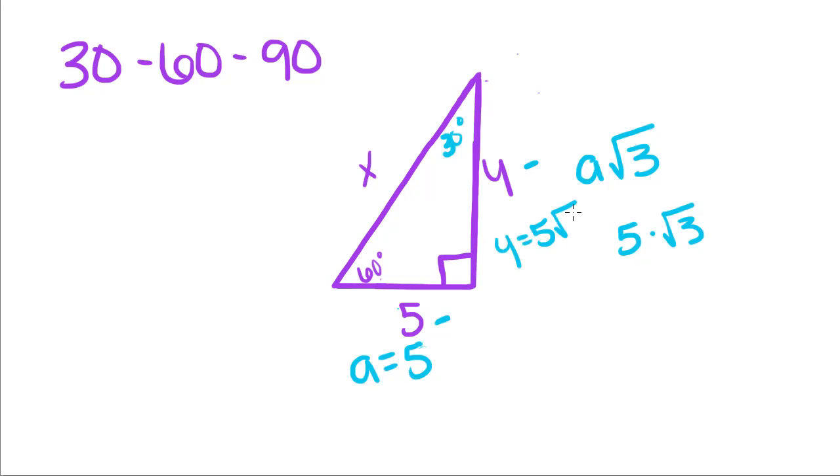And we know that this side is equal to 2 times A, so we just take 2 times 5, which is 10, so that means X is equal to 10.